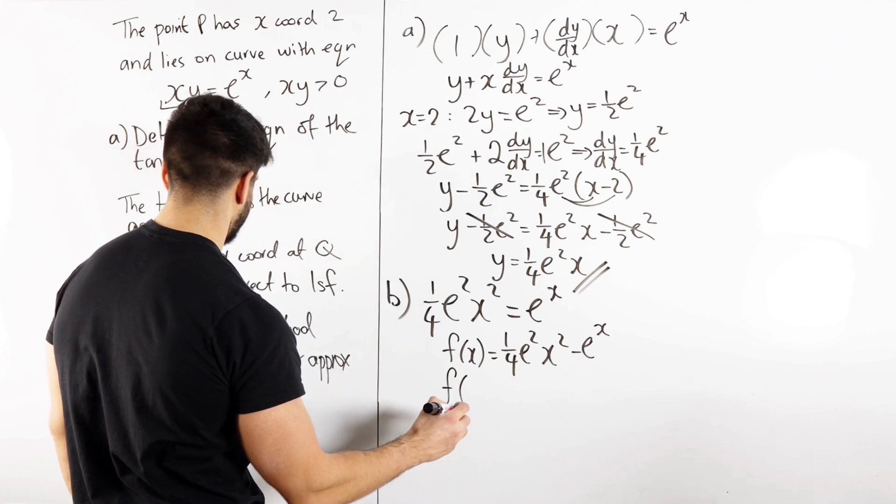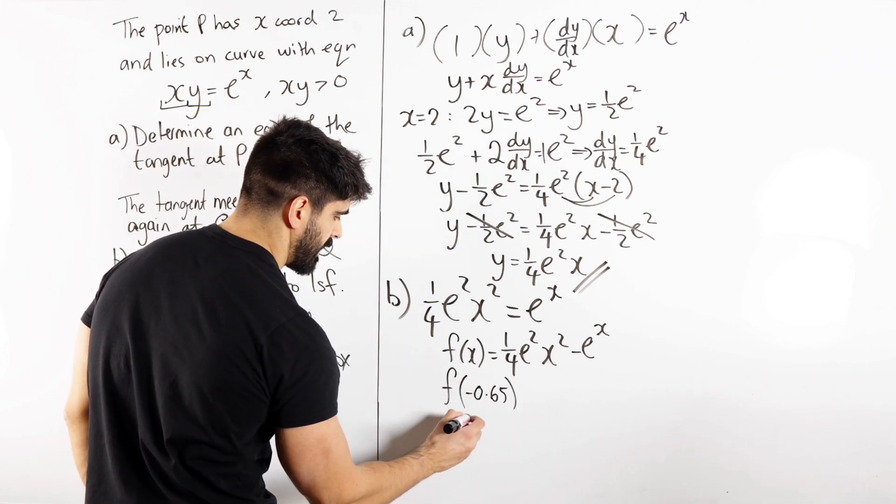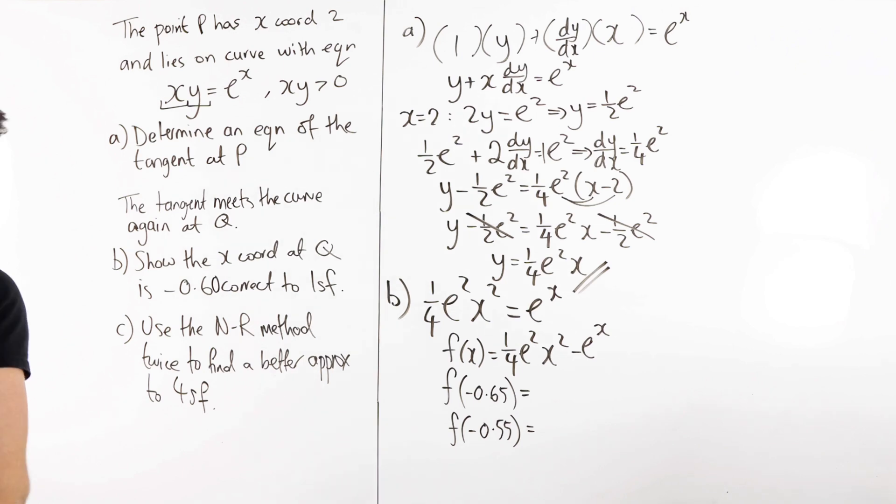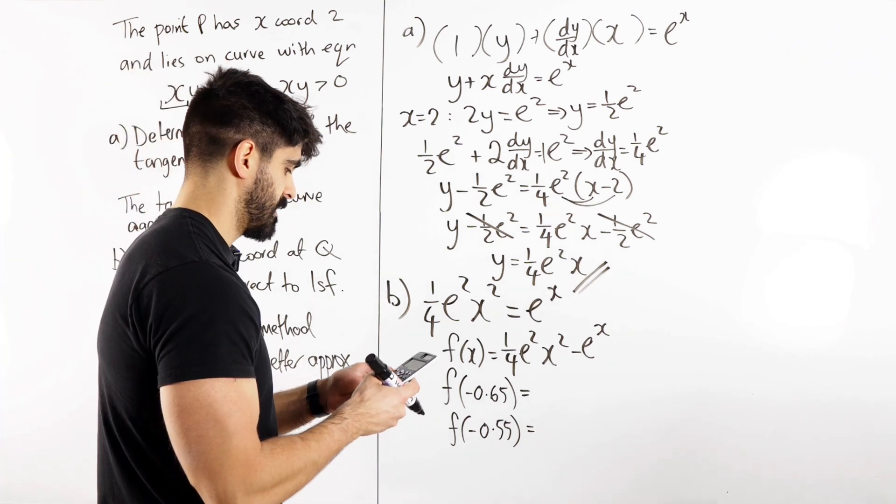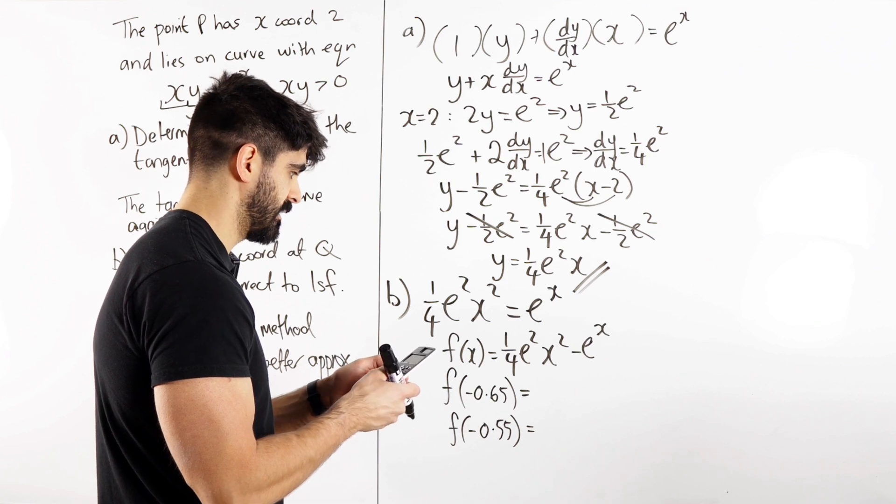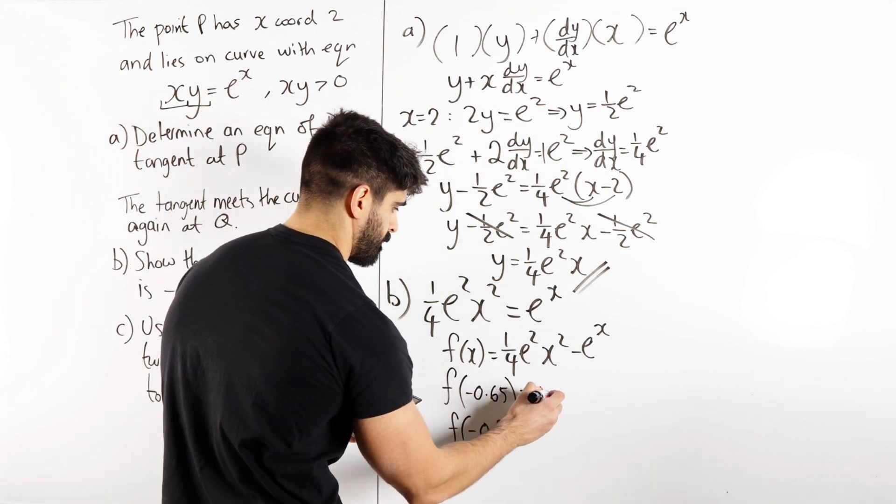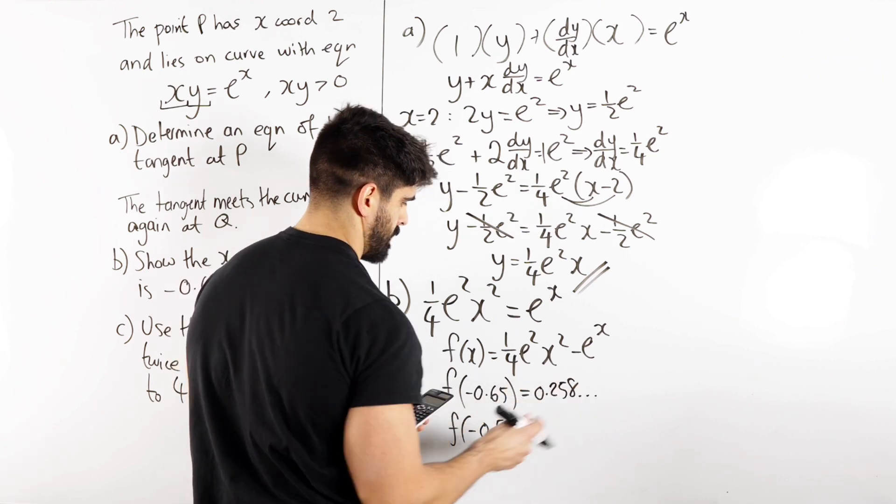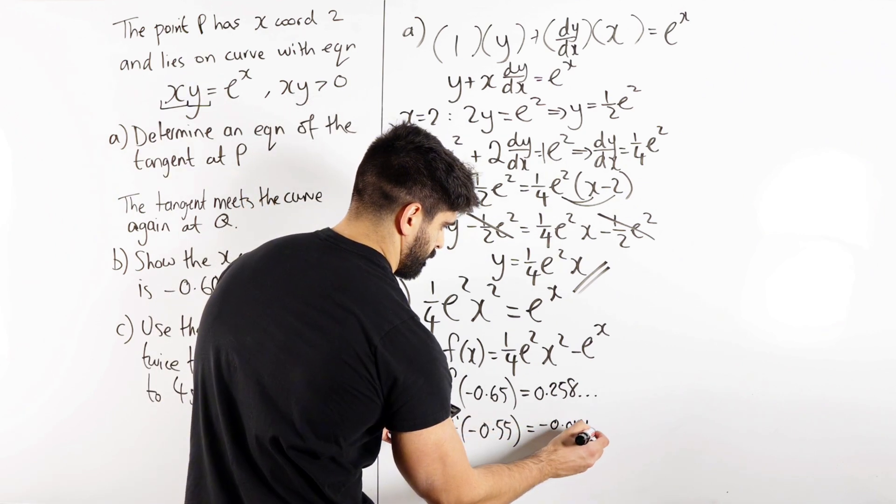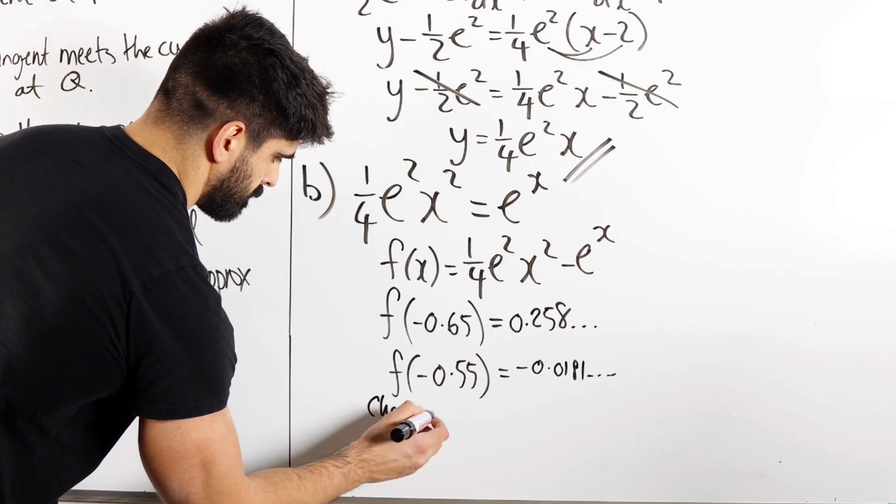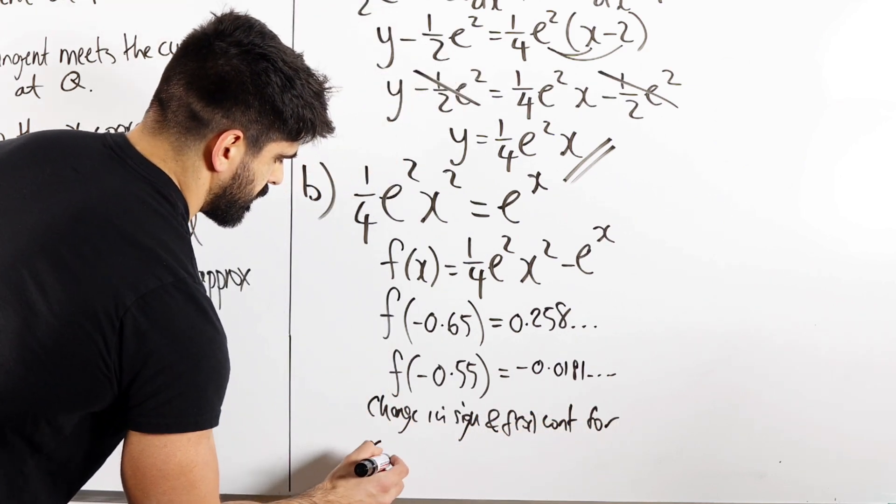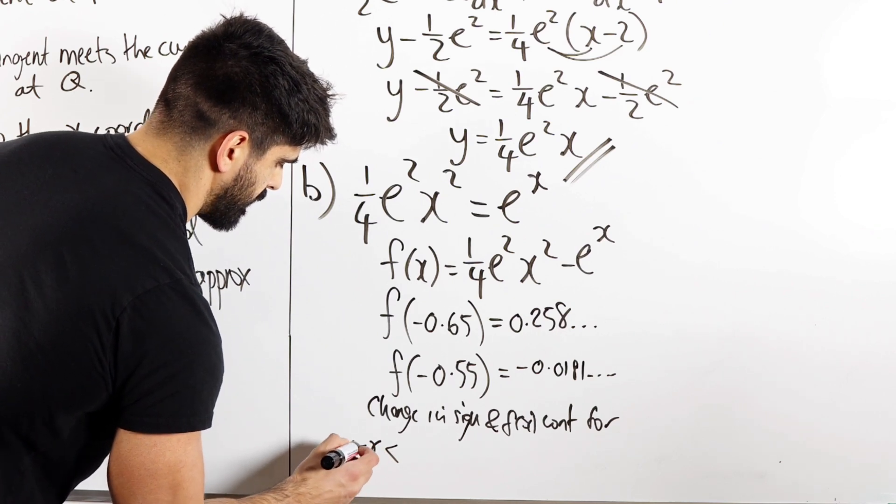So we're going to do f of minus 0.65 and f of minus 0.55. Okay, now for this the best way to do this is to store the value. So I'm going to do minus 0.65 store as a and I have a quarter e squared a squared minus e to the power of a, which gives me 0.258. Then I just press the calc button, change it to minus 0.55, which is negative. So we're going to say change in sign.